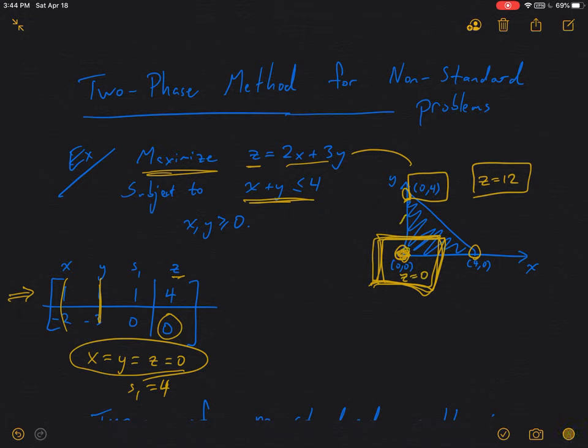And then if it has negative indicators still, then by pivoting, will transfer to one of these adjacent corners. And it'll keep transferring from corner to corner until it finds the best corner. So if we were to pivot here, then we would find a corresponding x value of 0, a y value of 4, and a z value of 12 after pivoting from this simplex tableau once and then reading off the solution.